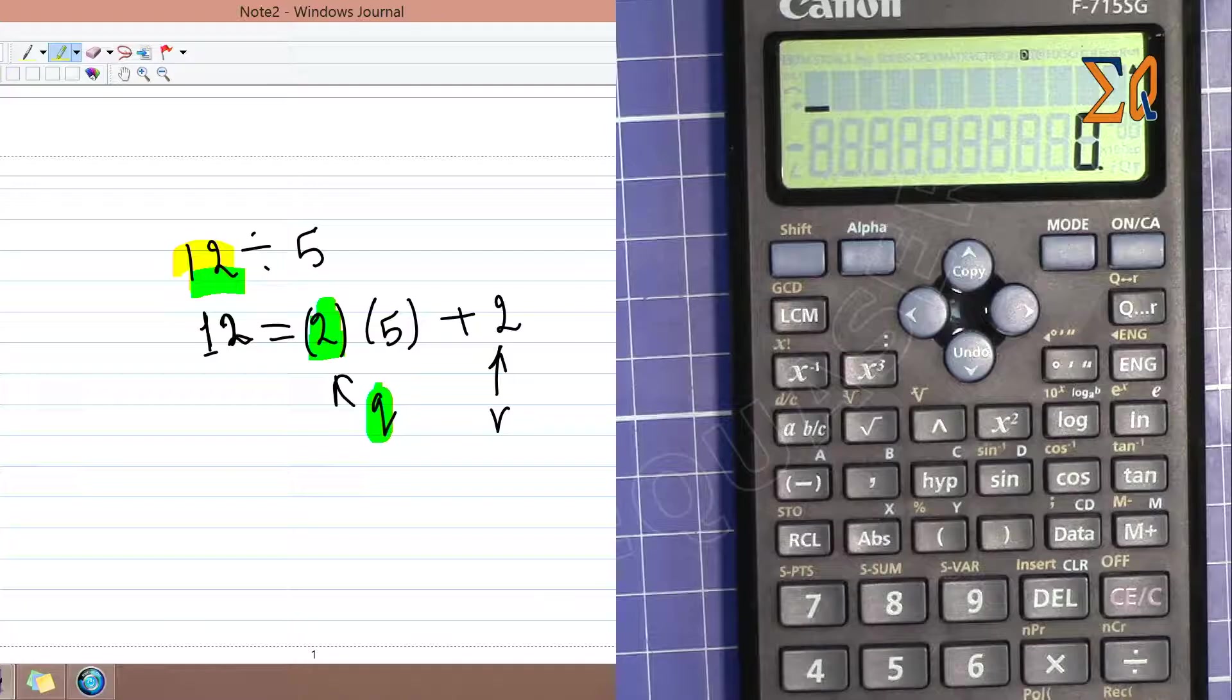Hi, welcome to Equasor. In this video, I'm going to show you how you can find the quotient and remainder, sometimes called modulus, of a value using the Canon scientific calculator F715SG. Let's get started.